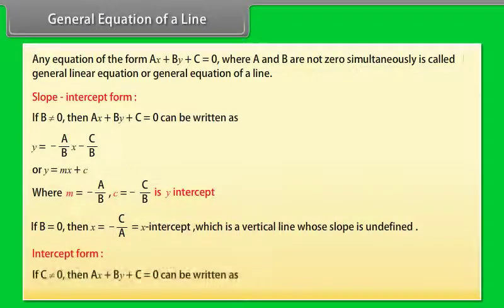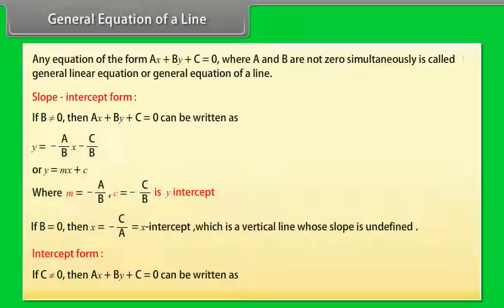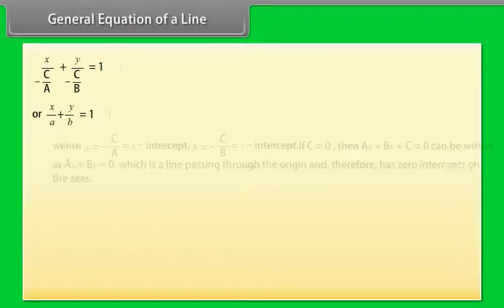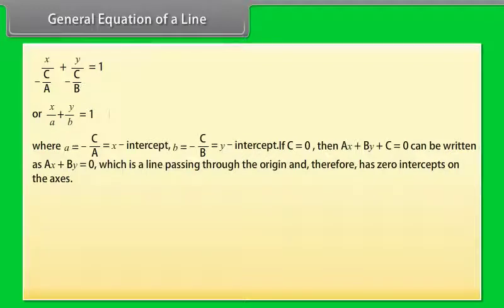Intercept form: if c ≠ 0, then ax + by + c = 0 can be written as x/a + y/b = 1, where a = −c/a is the x-intercept and b = −c/b is the y-intercept. If c = 0, then ax + by = 0 is a line passing through the origin and therefore has zero intercepts on both axes.